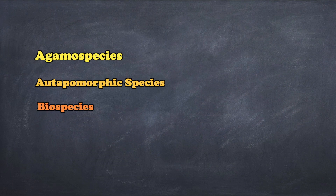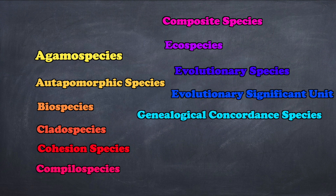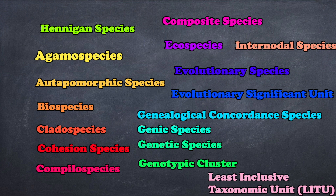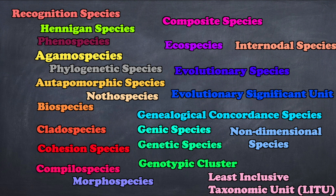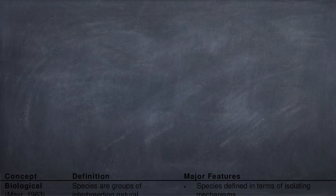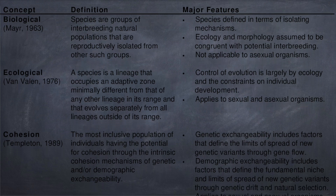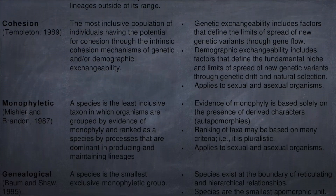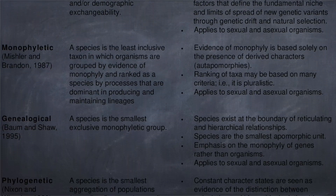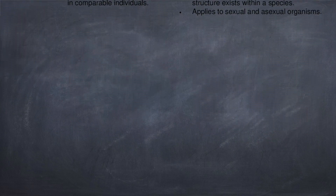So biologists came up with another species concept. And another. And another. That's how we got here: each new species concept generally attempts to solve a previous inconsistency from a former concept, but by doing so, it will inevitably open up its own new can of worms.